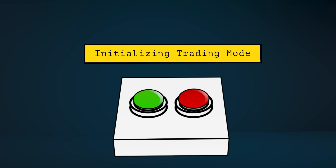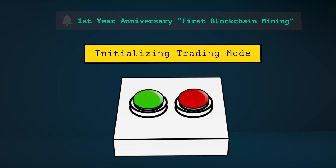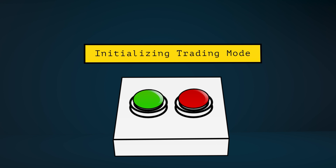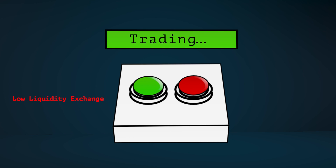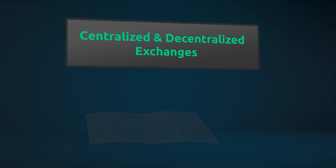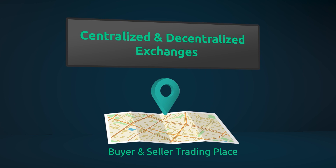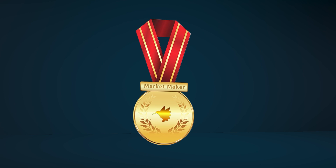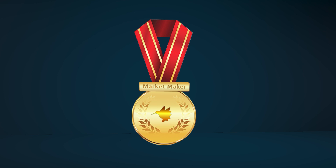Imagine wanting to buy Bitcoin one year after Satoshi Nakamoto mined the first block. At the time it was an illiquid market, and it was pretty hard for buyers and sellers to meet each other at the exact moment they wanted to trade. The rise of both centralized and decentralized exchanges created places for buyers and sellers to meet, but market makers and liquidity providers play a major role in improving the liquidity of those markets.